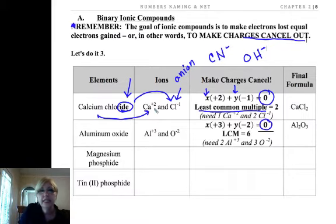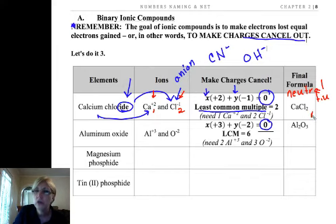Now another way to do it is here I need the least common multiple of two and one. Well, one times two is two and two times one is two, so I need one calcium, we never write it, and I need two chlorides. Now bear in mind that in a neutral formula unit you want no charges showing. All those charges you can do in your work, but if it's a neutral formula unit you don't want any charges showing in the final formula.